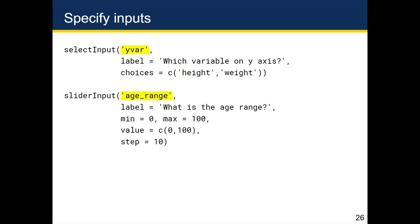You can also set step to 10, which tells Shiny that when you slide the input, the only options you can select are multiples of 10. Because I started at 0 and went to 100, the available options are 0, 10, 20, 30, and so on — so I'm not accidentally selecting some very specific fraction like 3.44.